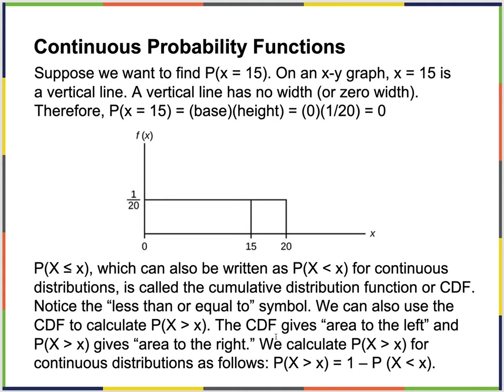The CDF — cumulative density function — that we've talked about before: the cumulative relative frequency function. From 0 to 15 is the CDF of this function. The probability of 0 up to a number is always a cumulative density function.